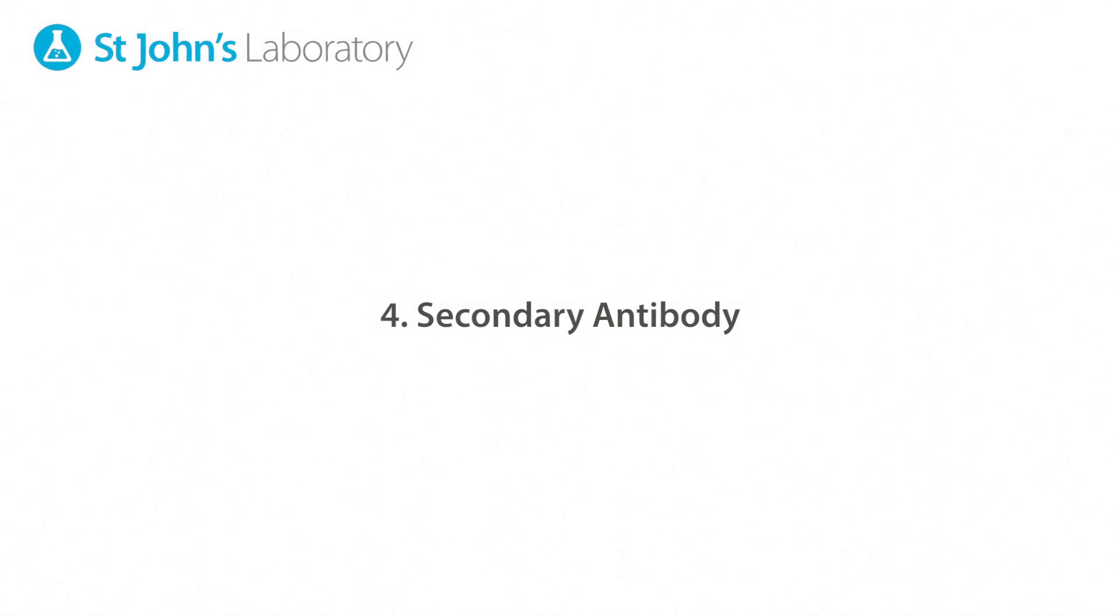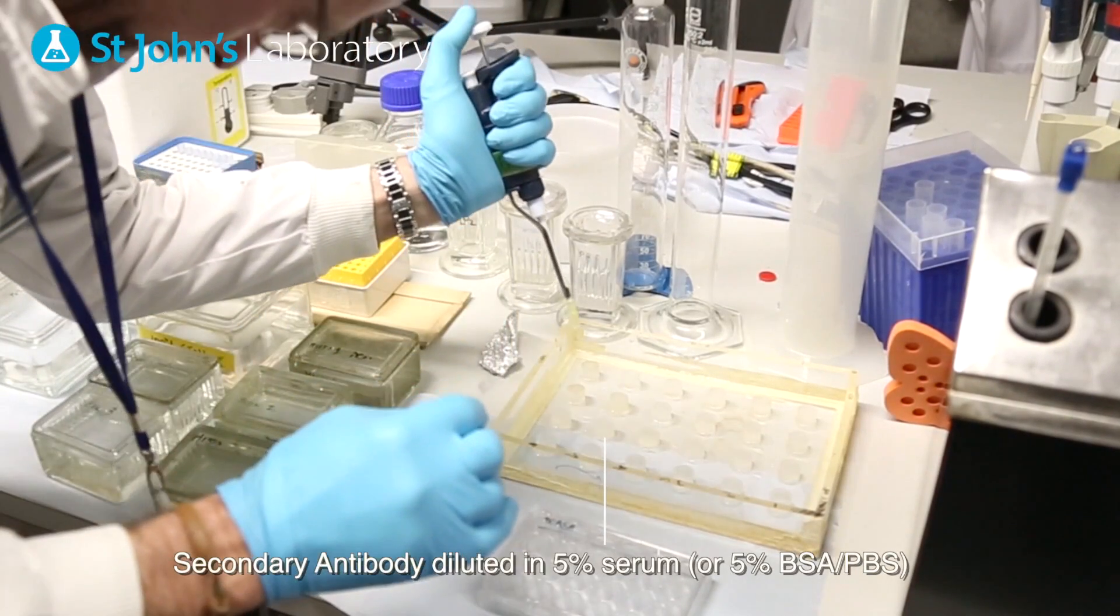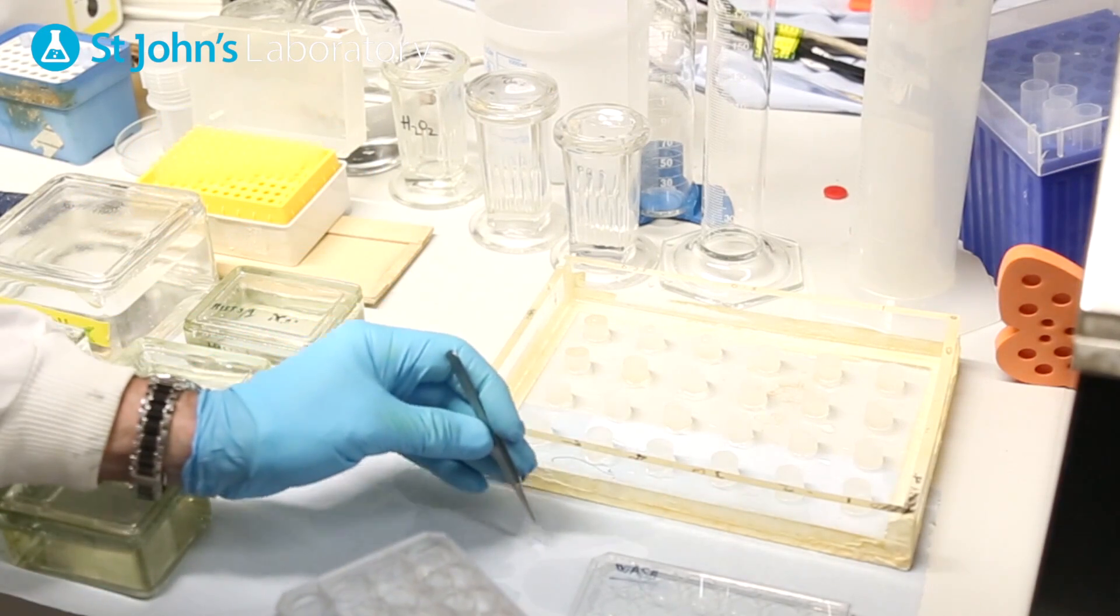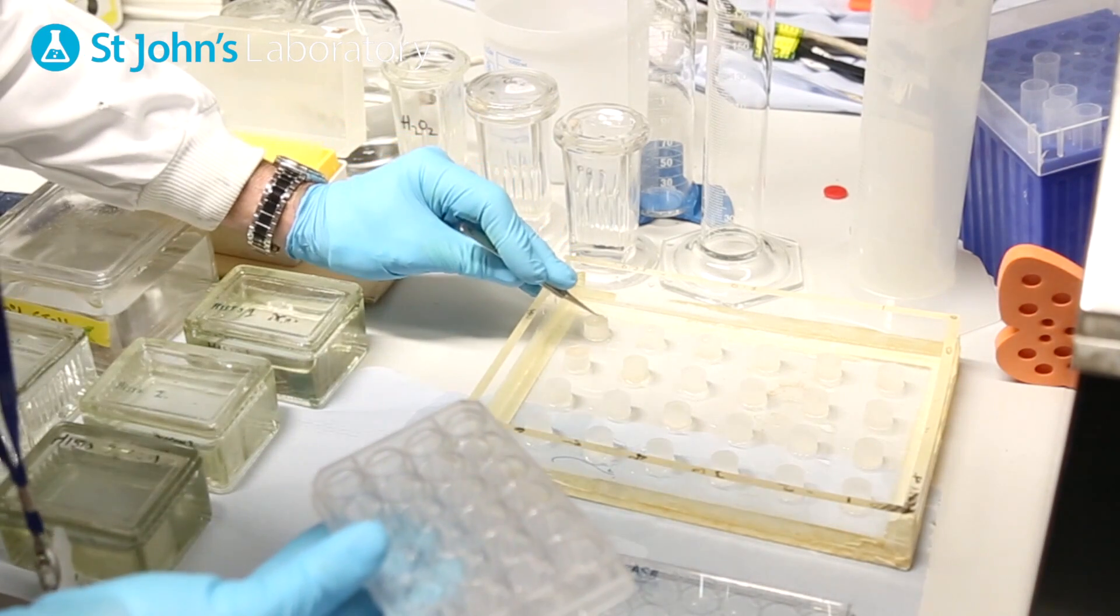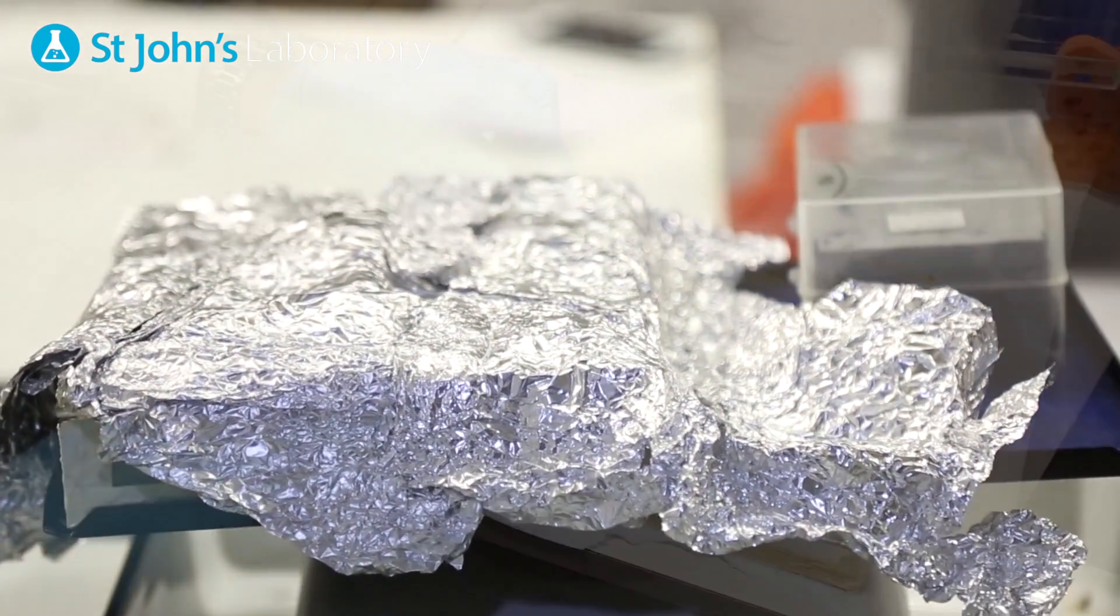Carry out your secondary antibody application in a similar manner to that of your primary. Ensure that your secondary antibody is conjugated with an appropriate fluorophore for visualizing the protein of interest. Incubate this for 1 hour under foil to prevent bleaching the fluorophores.